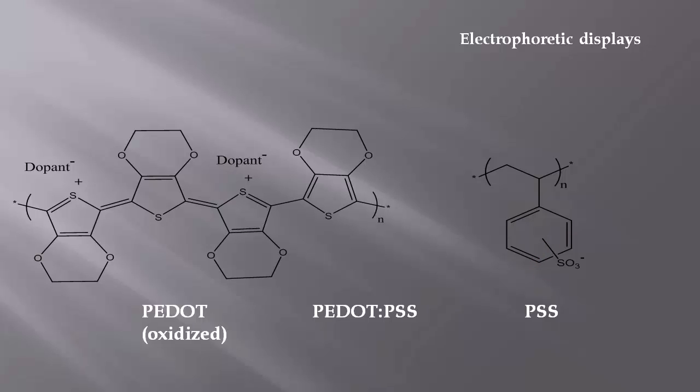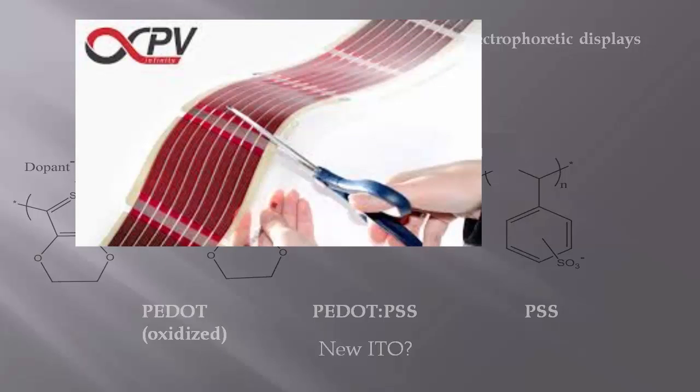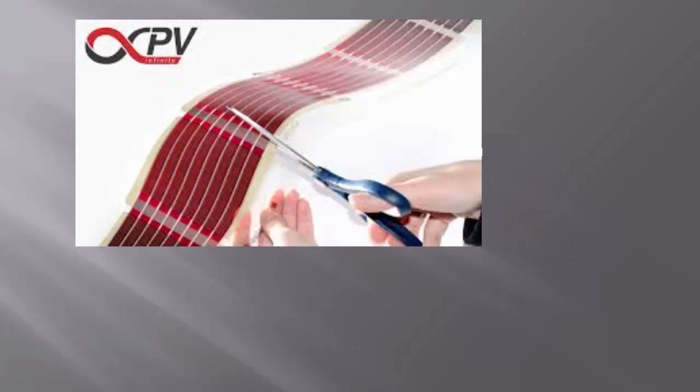Because of the high conductivity and transparency, it is even starting to replace dwindling supplies of indium-tin oxide, especially in solar cells. Polymer solar cells, one of the most novel applications of conjugated polymers.